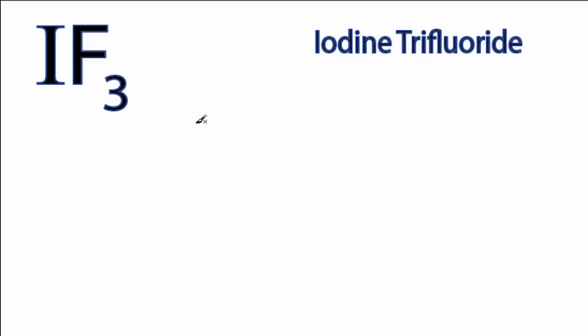This is the IF3 Lewis structure. Iodine has 7 valence electrons, fluorine 7 as well, but we have 3 fluorines for a total of 28 valence electrons.